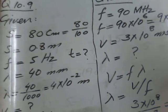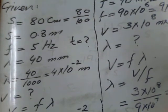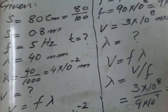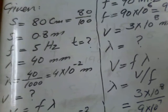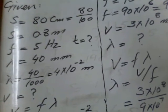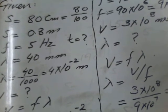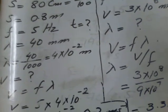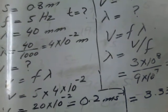In question number 10.9, the given data: the distance that the wave covered is equal to 80 cm. We change it into meters by dividing by 100, S is equal to 0.8 meters. And the frequency is 5 Hz and we have to find the time in which the waves cover this distance.